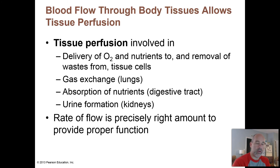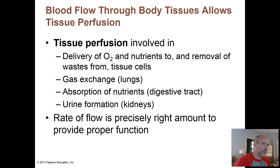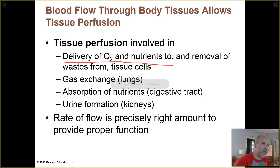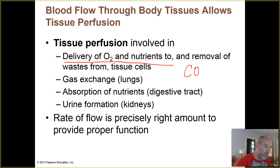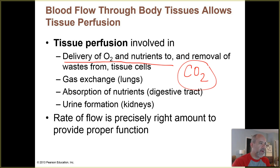The goal of your cardiovascular system is to make sure that your body tissue gets perfusion. Tissue perfusion is involved in the delivery of O2 and nutrients and removal of wastes generated by your tissue cells. A key waste is carbon dioxide, which is a waste product of the cellular respiration processes used for making ATP.